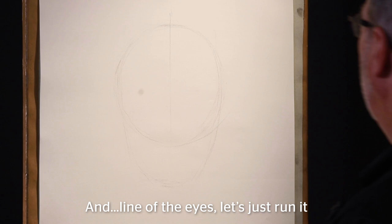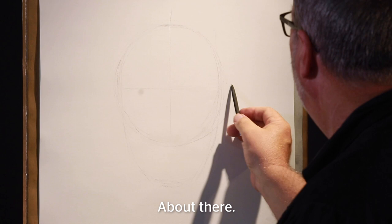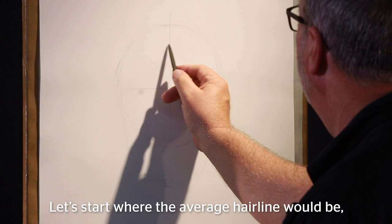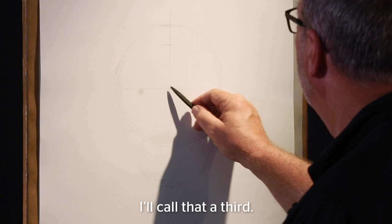And the line of the eyes, let's just run it right through the middle of this, the sphere, about there. Now I'm going to come down. The top of the head is in the back. Let's start with where the average hairline would be. We'll get a measurement here. I'll call that a third. A third to there, a third to here, and a third to the base of the chin.